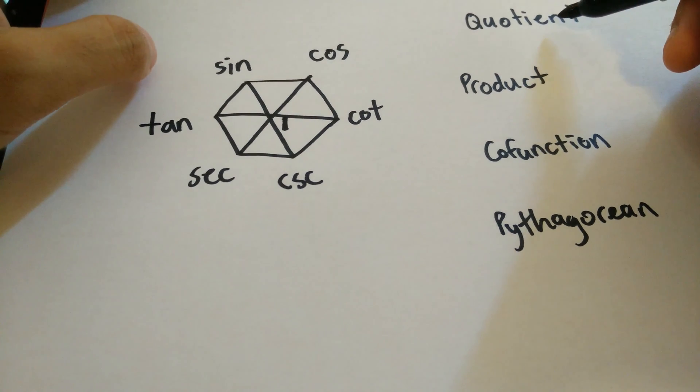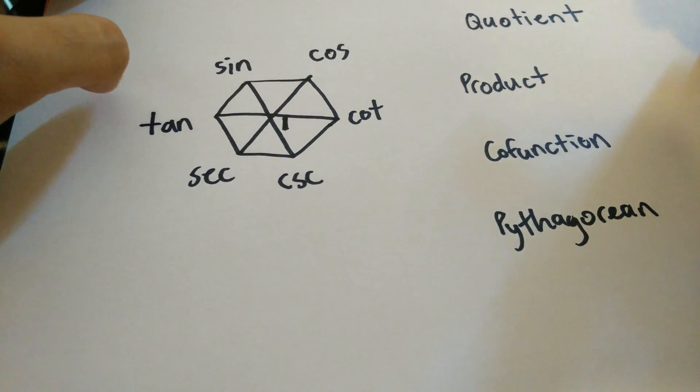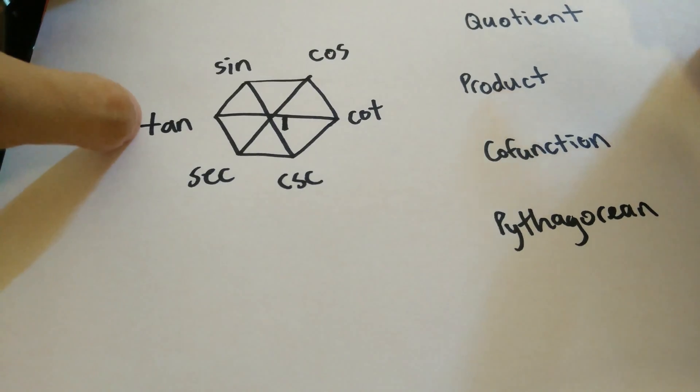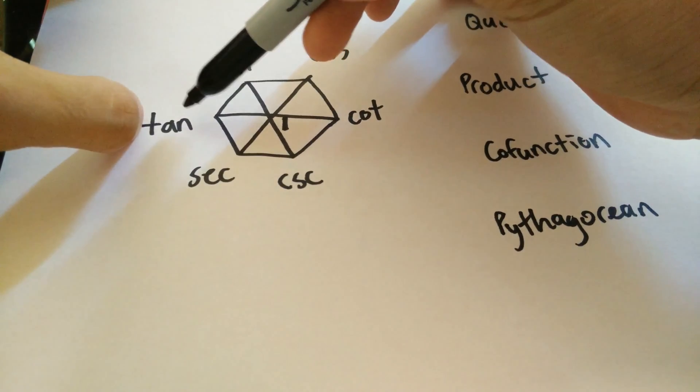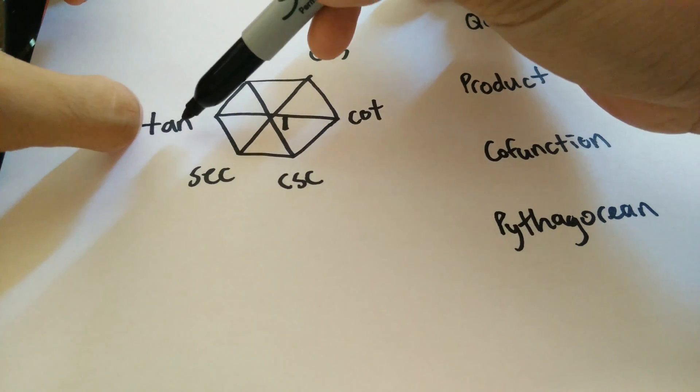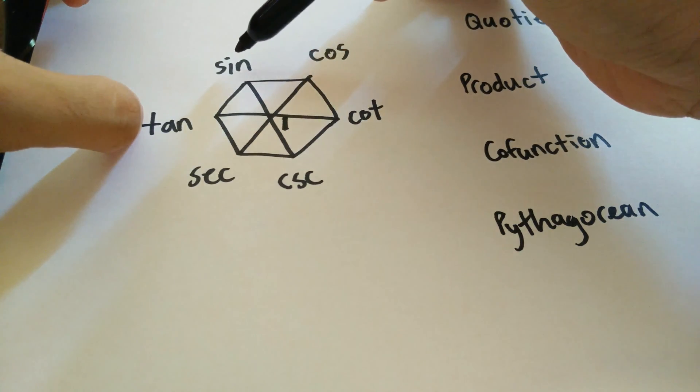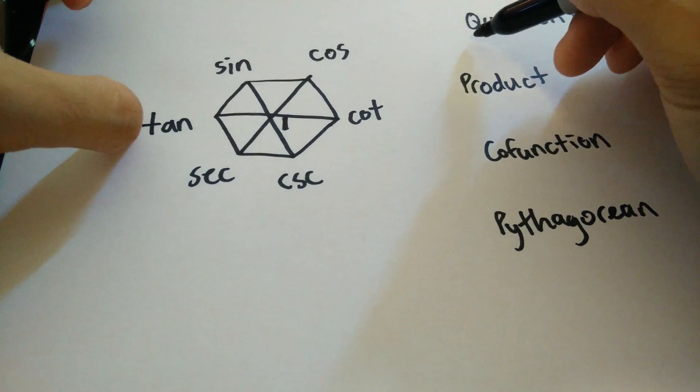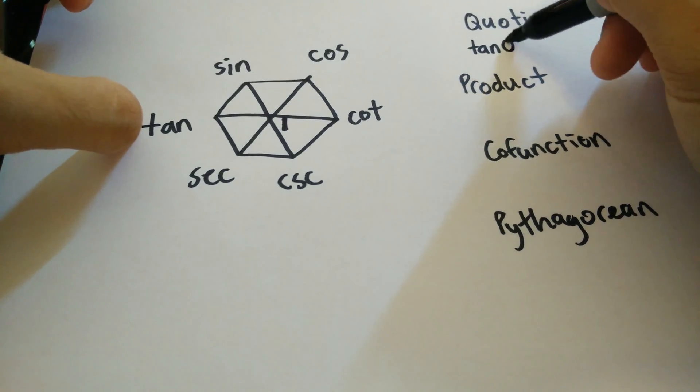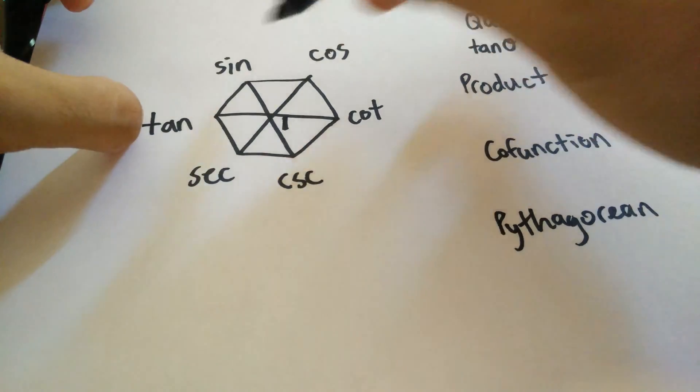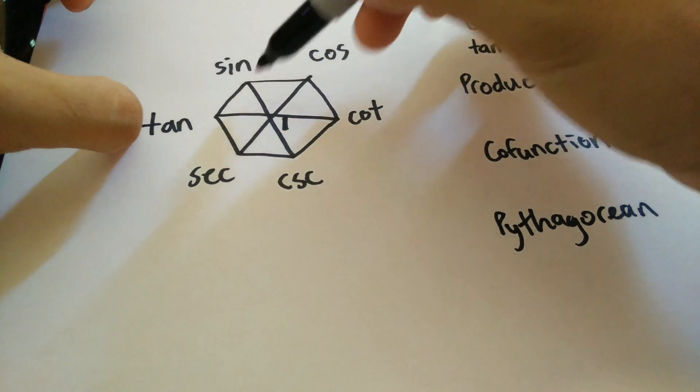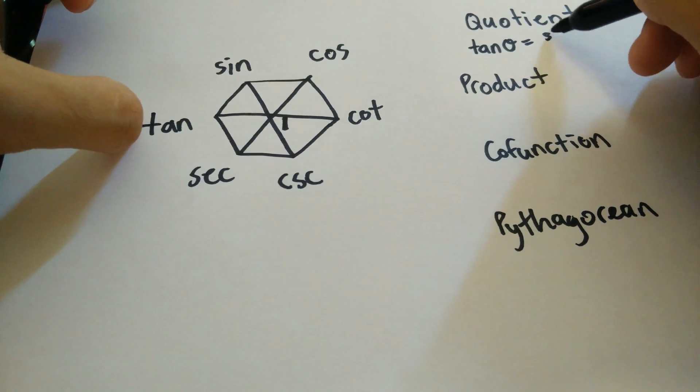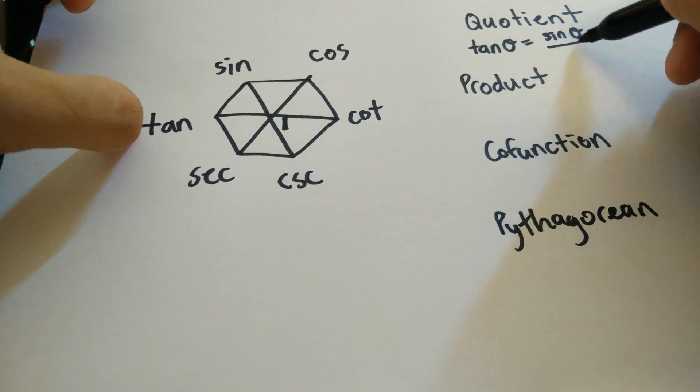To use the quotient identities, all you need to do is find one function, for example, let's use tangent, and go clockwise. Take the next two functions, and you know that tangent theta is equal to sine theta over cosine theta. So I'll write that down. Tangent theta is equal to, take the next two functions and divide them. Tangent theta is equal to sine theta over cosine theta.